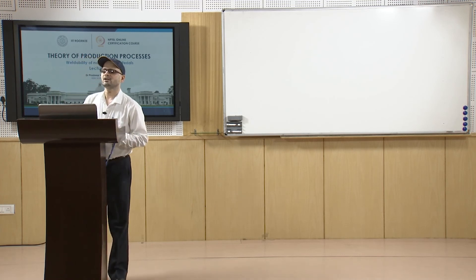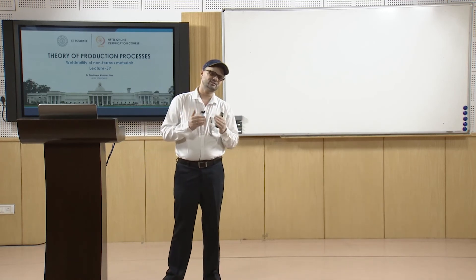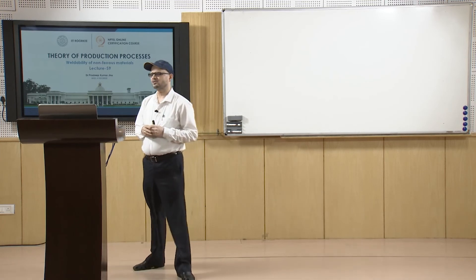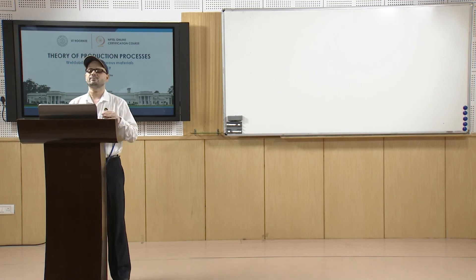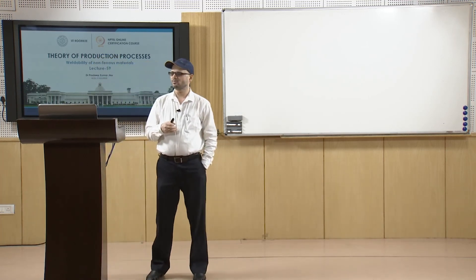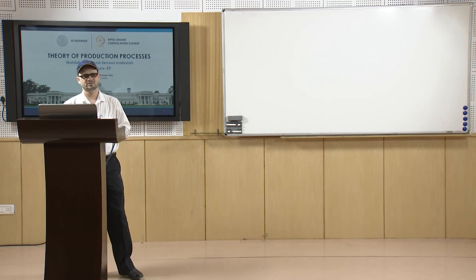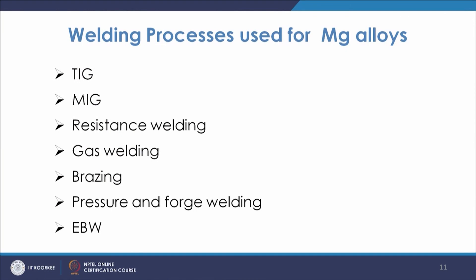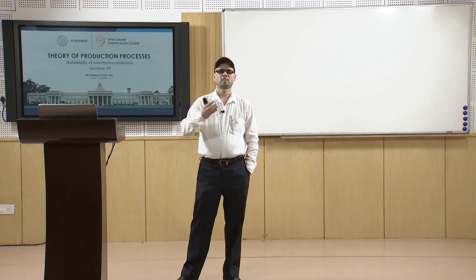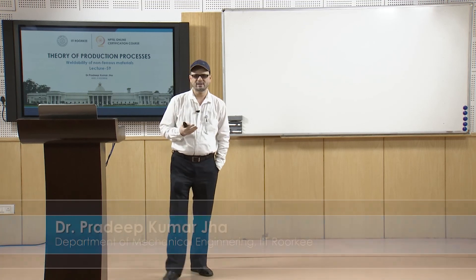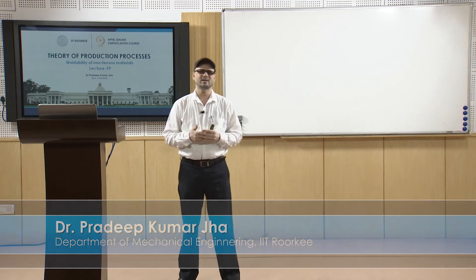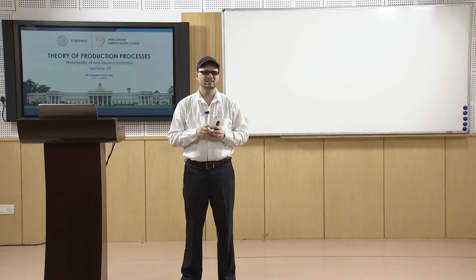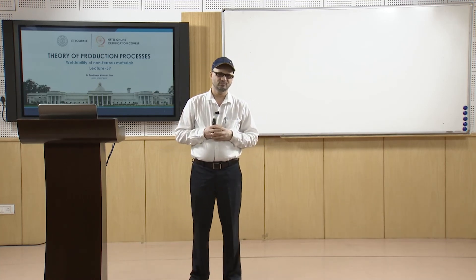Surface preparation and cleaning are important for magnesium, since surfaces are often painted. The processes used for magnesium alloys include TIG, MIG, resistance welding, gas welding, brazing, pressure and force welding, and electron beam welding (EBW). Optimized welding parameters are needed, with careful attention to high thermal conductivity, oxidation, grain growth, and aging to achieve satisfactory welds.